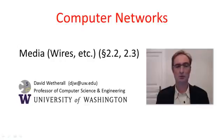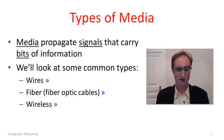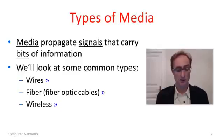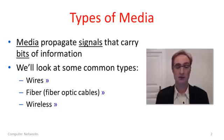G'day viewers. In this segment we'll talk about different kinds of media, wires and so forth. This is material at the bottom of the physical layer. There are three kinds of media which are very common that we'll talk about: wires, fiber optic cables, and also wireless. The issue with all of these kinds of media is that they propagate signals, and these signals carry bits of information. Then we'll move on to understand how signals which carry the information are propagated across these media.